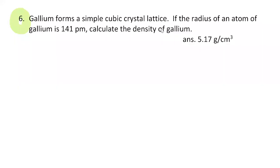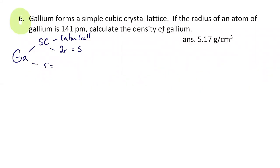The first question: gallium is in a simple cubic lattice. Organizing information for simple cubic structures — there are just eight atoms at the corners of the cube, so that means there is one atom per cell. In simple cubic, two atoms are touching on every edge, so two radii equal s, where s is the side length of the cube. The radius of the gallium atom is given as 141 picometers.